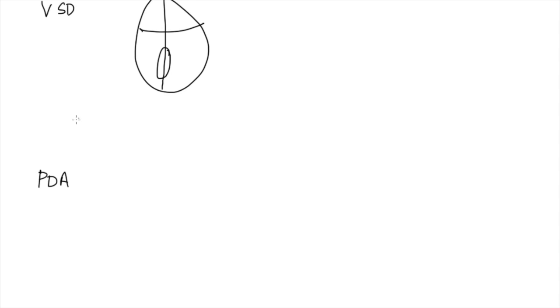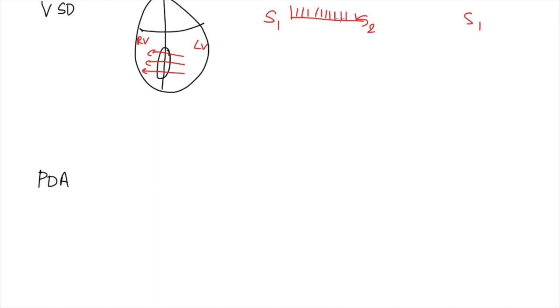Ventricular septal defect (VSD): blood flows from the left ventricle to the right ventricle through the defect, from high to low pressure. This occurs when the left ventricular pressure is high - during systole. Since the left ventricular wall is thicker, pressure generated is way higher, so throughout systole blood flows left to right. VSD produces a systolic murmur.